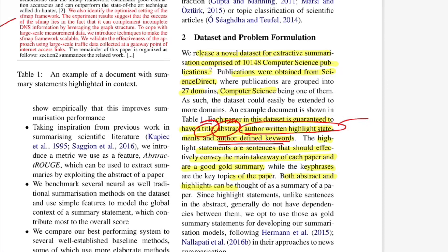They say both abstract and highlights can be thought of as a summary to the paper, which is true. Since highlight statements, unlike sentences in the abstract, generally do not have dependencies between them, they opt to choose those as gold summary statements for developing summarization models. They could have chosen abstract as ground truth, but if you read the abstract there's a topical flow - they talk about motivation, then methodology, and at last conclusion. There was no flow when they saw the highlighted summaries, so that's why they didn't choose abstract as ground truth, as that would have added a bias of topical sequence while modeling.